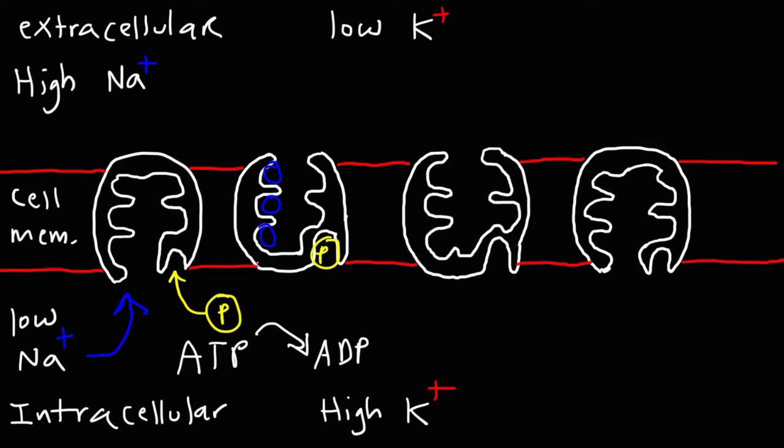Once the sodium ions enter, as well as the phosphate group, the protein changes shape. On the bottom, it closes; on the top, it's going to open, giving us the shape that we see here. In the next step, the pump is going to lose affinity for the sodium ions. So the three sodium ions are going to leave, and this is going to maintain a high external concentration of sodium ions.